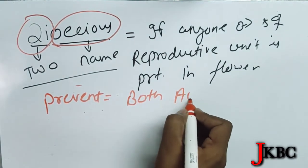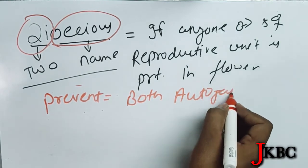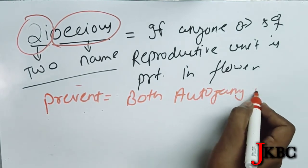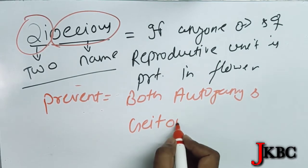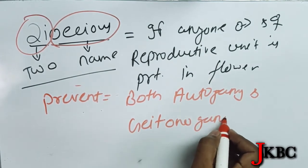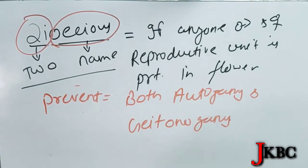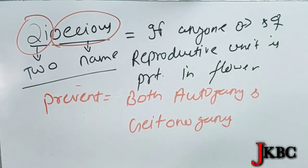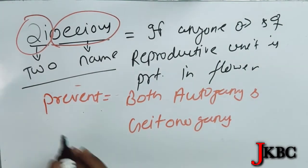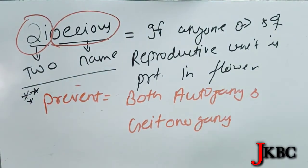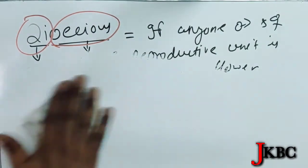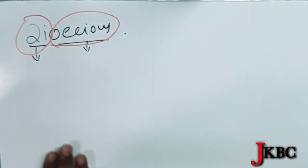In dioecious plants, we can prevent both autogamy and geitonogamy. This is very important. Mark it — the prevention of both autogamy and geitonogamy is the most important point about dioecious plants for your exam.